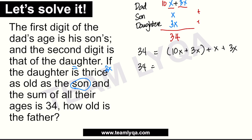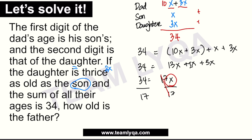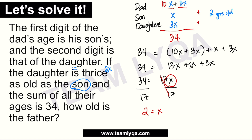Combining like terms: 34 equals 10x + 3x = 13x, plus x + 3x = 4x. So 34 equals 13x + 4x = 17x. Dividing both sides by 17: x = 2. So the son is 2 years old. The daughter is 3 times 2 = 6 years old. The dad's first digit is 2 and second digit is 6, so the dad is 26 years old.